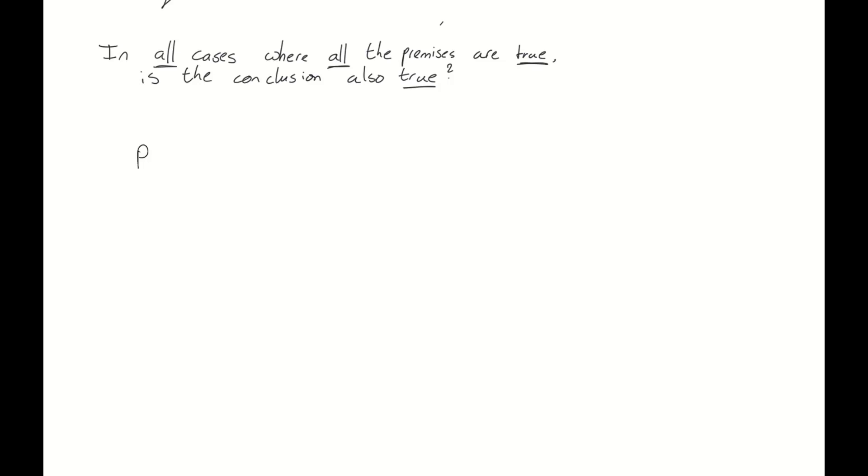So this is our argument, P implies Q, P, therefore Q. In the truth table, we have two variables, so four values. And we're going to take a look at both premises, P implies Q, P, as well as the conclusion, Q. Now, all four scenarios, we write it out, we've seen the truth table for this quite often now, so I'm not going to discuss it.